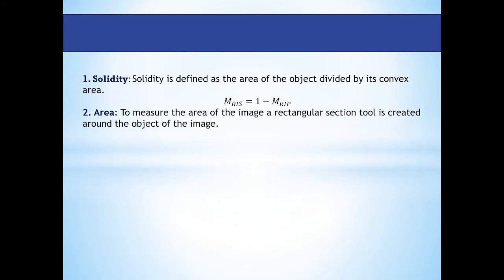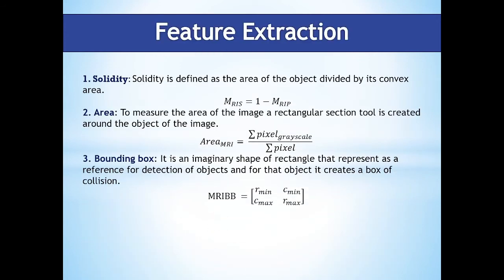After segmentation, the image is ready for feature extraction. First, we labeled all connected components because a tumor is always present in cluster form. To detect the presence of a tumor, we labeled every pixel of the segmented image and calculated area, solidity, and bounding box. Solidity is defined as the area of the object divided by its convex area — it is the complement of porosity. MRIP represents MRI porosity (the number of ones in the pixels) and MRIs represents the image's solidity. To measure the area, a rectangular section is created over the object; the area is the sum of gray values of all pixels in that rectangle divided by the total number of pixels.